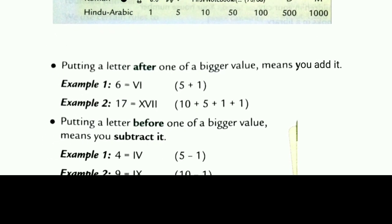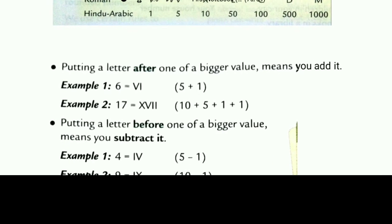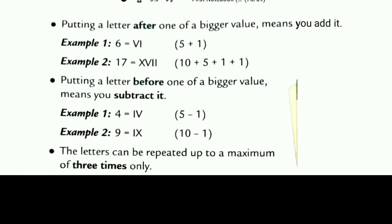Some certain rules are here. The first one: putting a letter after one of a bigger value means you add it. Example, 6 means V and I. We know the basic is 5, so 5 plus 1 equals 6, we write VI. Next, 17 means 10 plus 5 plus 1 plus 1. So 10 is X, 5 is V, and 1 and 1 means II. So XVII.